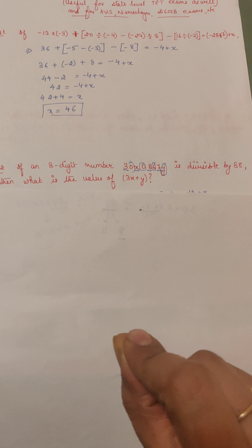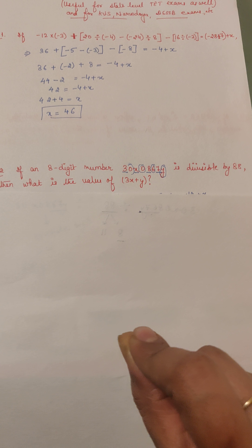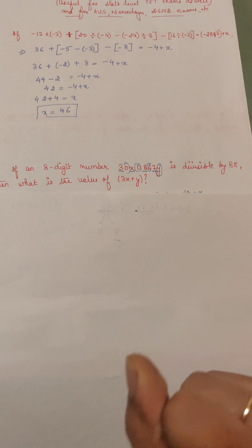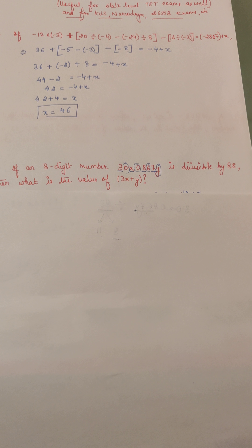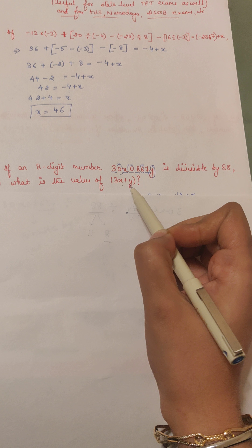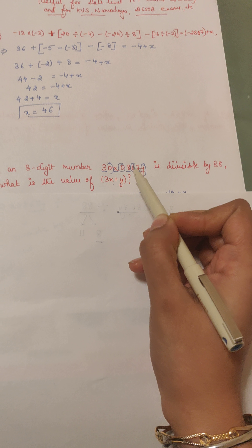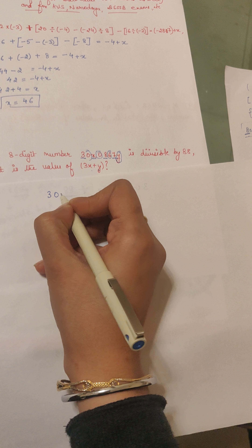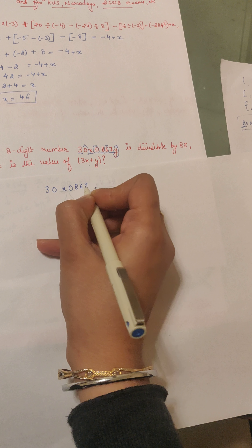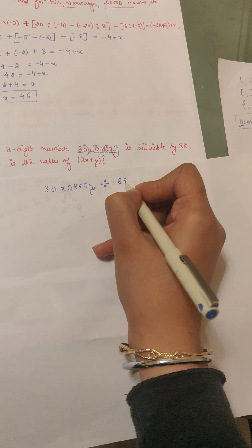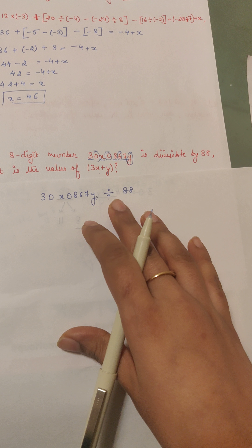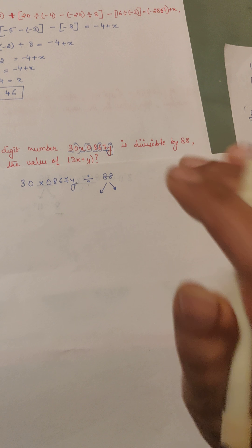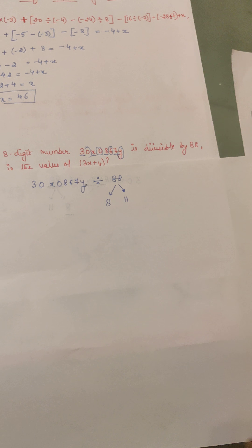The next question: an 8-digit number 30X08 67Y is divisible by 88. What is the value of 3X plus Y? To solve this, you need to find X and Y first, then substitute. Since the number is divisible by 88, the shortcut or trick is to break 88 into its factors — you get 8 and 11, since 8 into 11 is 88.